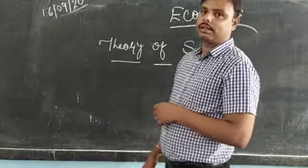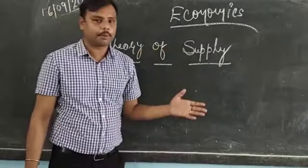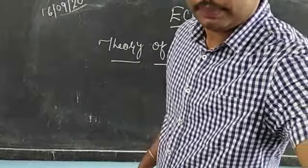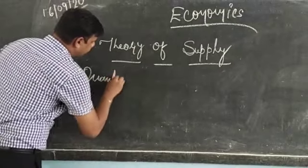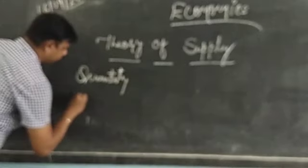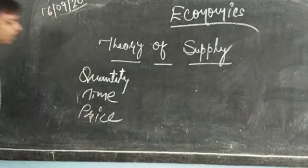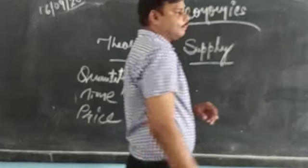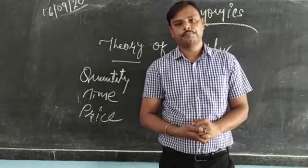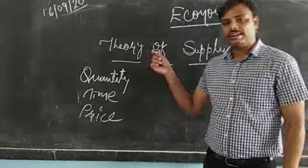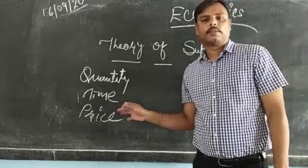Three things — Quantity, Time, and Price — play a prominent role in taking the decision whether to supply a product or not. These three factors are to be kept in mind. If you remember the definition of Theory of Demand, I told you about these three: Quantity, Time, and Price. Same is the concept over here.